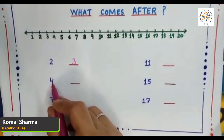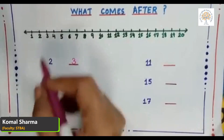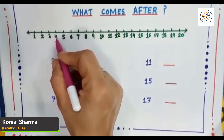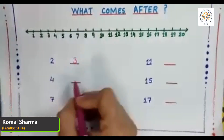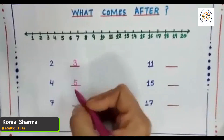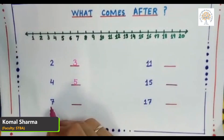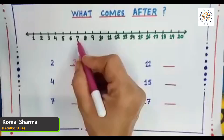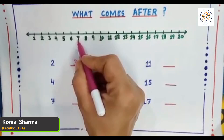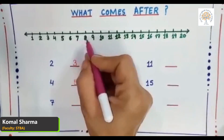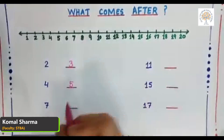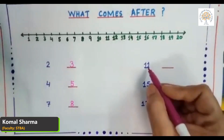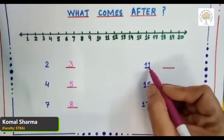Now tell me, which number comes after number four? On the number line, here is number four — what comes after number four? It is number five. Okay students, now tell me what comes after number seven. On the number line, here is number seven — what comes after number seven? Yes, it is number eight.